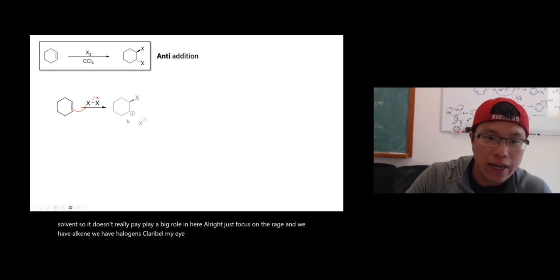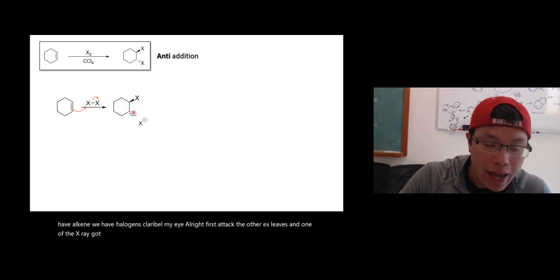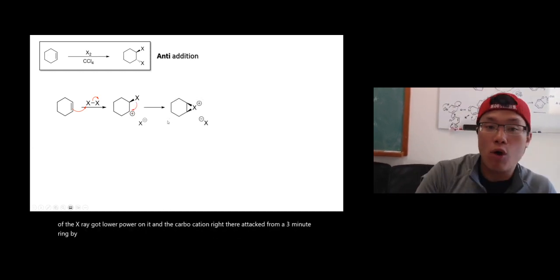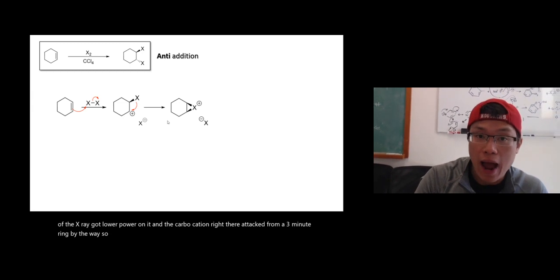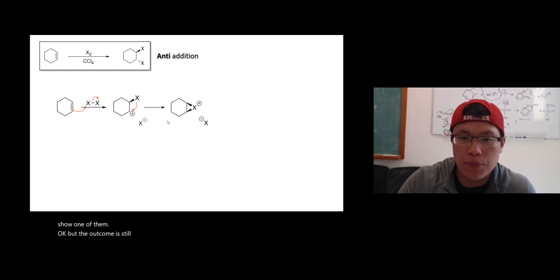I first attack, the other X leaves, and one of the X got lone pair on it, and the carbocation right there attacked from a three-membered ring. By the way, so there are multiple proposed mechanisms for this reaction. I just show one of them, okay, but the outcome is still pretty much the same thing.